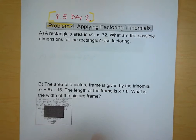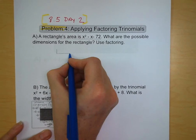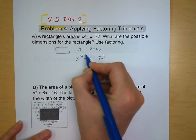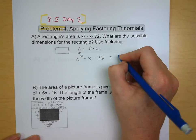Our word problem is we have a rectangle's area being represented by x² - x - 72. We want to know what the possible dimensions for this rectangle are going to be, and we're going to use factoring for this. We know that a rectangle is length times width for area, so now we're going to take that x² - x - 72 and figure out what are our lengths and widths. And we're going to factor it.